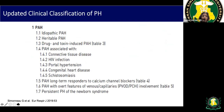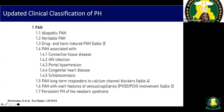Group one PH includes idiopathic, familial, drug- and toxin-associated, and connective tissue disease-related causes such as lupus, scleroderma, and rheumatoid arthritis. HIV can cause it, though rarely — about 0.5% of HIV patients. Connective tissue disease carries a 20–30% risk. Liver disease with portal hypertension, including patients with ascites or varices, is also important. Congenital heart defects like ASD and VSD, common in Pakistan, can also lead to PH.